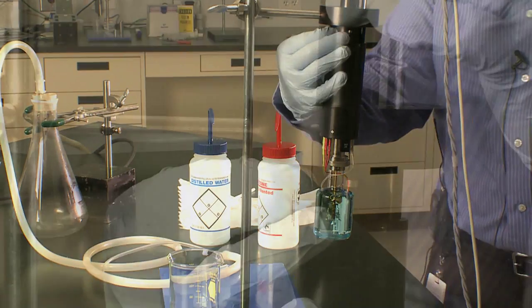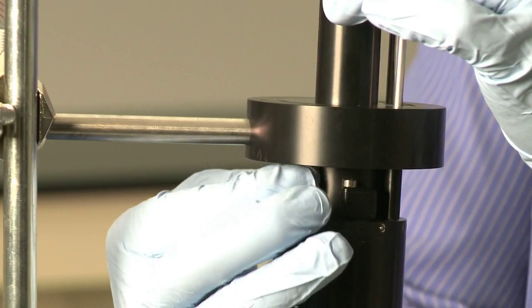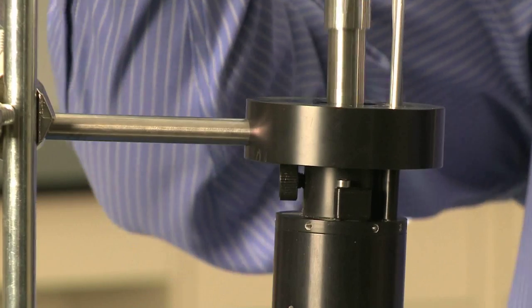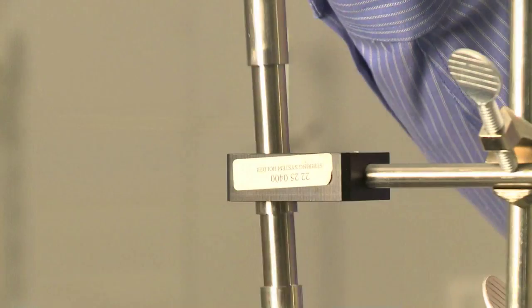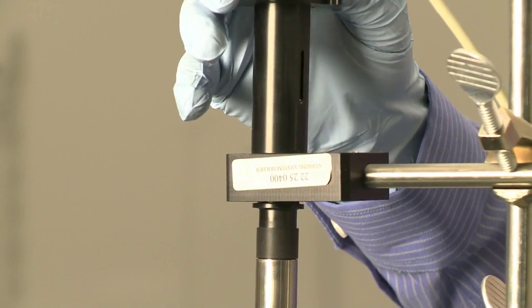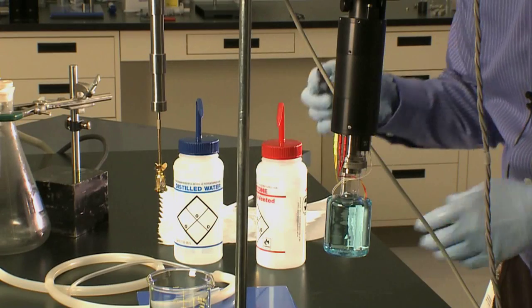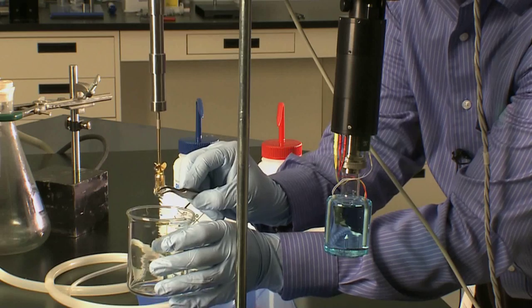First, remove the stirring mechanism by loosening the little lock screw and lifting it straight out of the solution calorimeter. Take it over to the ring stand holder. Then you can remove your glass ampoule from the experiment.